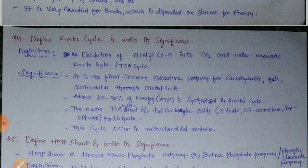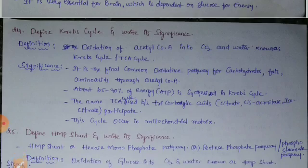About 65 to 70 percent of energy can be produced in the Krebs cycle. The name TCA cycle is because of tricarboxylic acids such as citrate, aconitate, and isocitrate — these three have three carboxylic acids in their structure. This cycle occurs in the mitochondrial matrix.